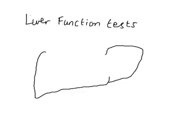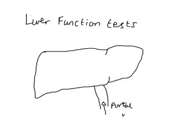First of all, just to review the anatomy of the liver. The liver has blood supply going into it from the portal system, from the intestines. That blood travels through the liver, having been cleaned and had substances added to it, before coming out the other side into the hepatic vein, which then travels up to the heart to be pumped around the rest of the body.